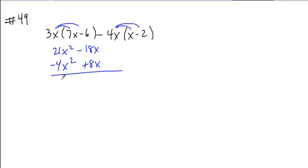Combine my like terms straight down these columns. 21 minus 4 gives me 17x squared, and minus 10x would be my simplified form.